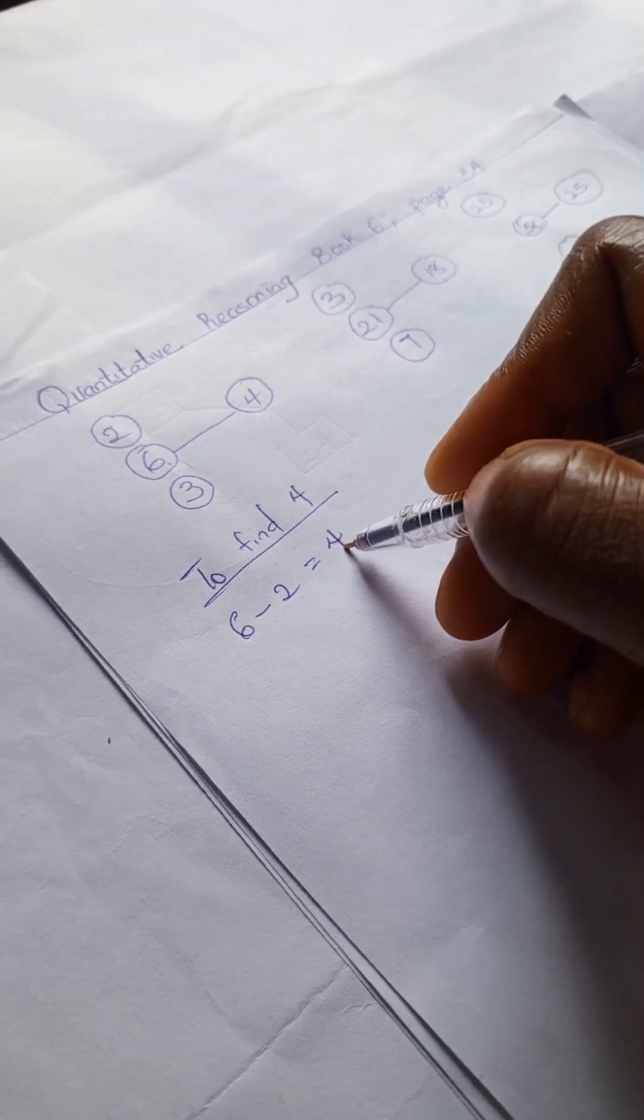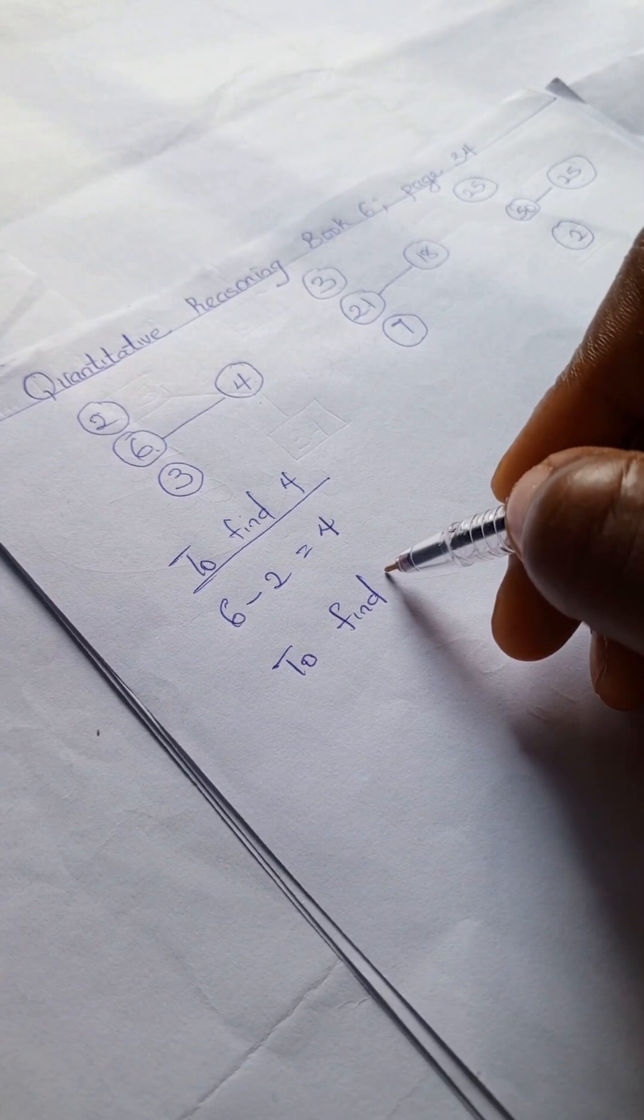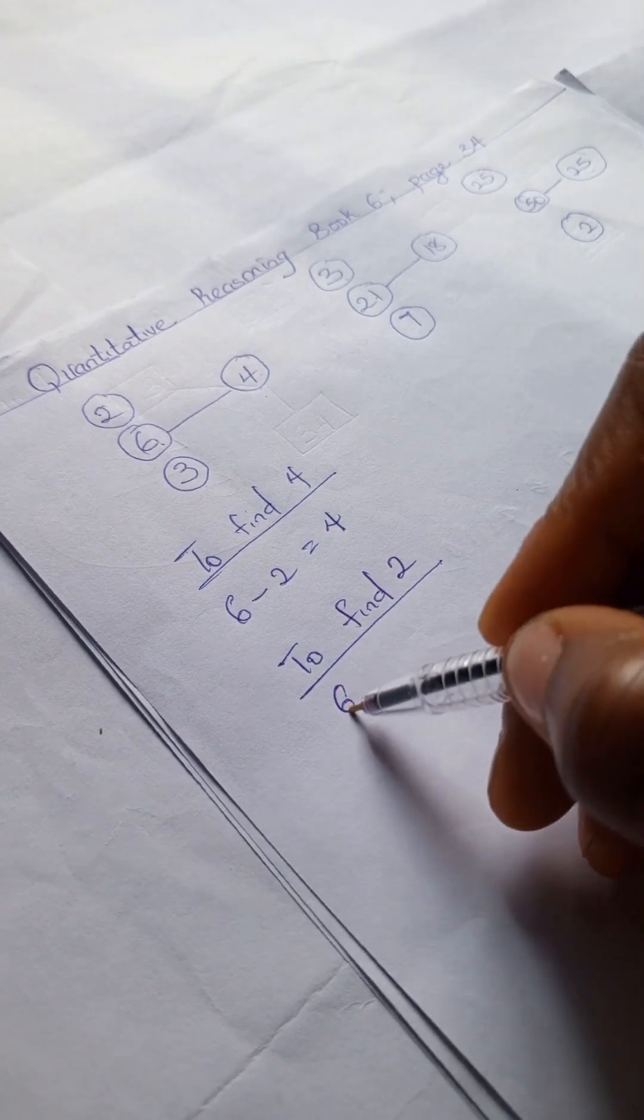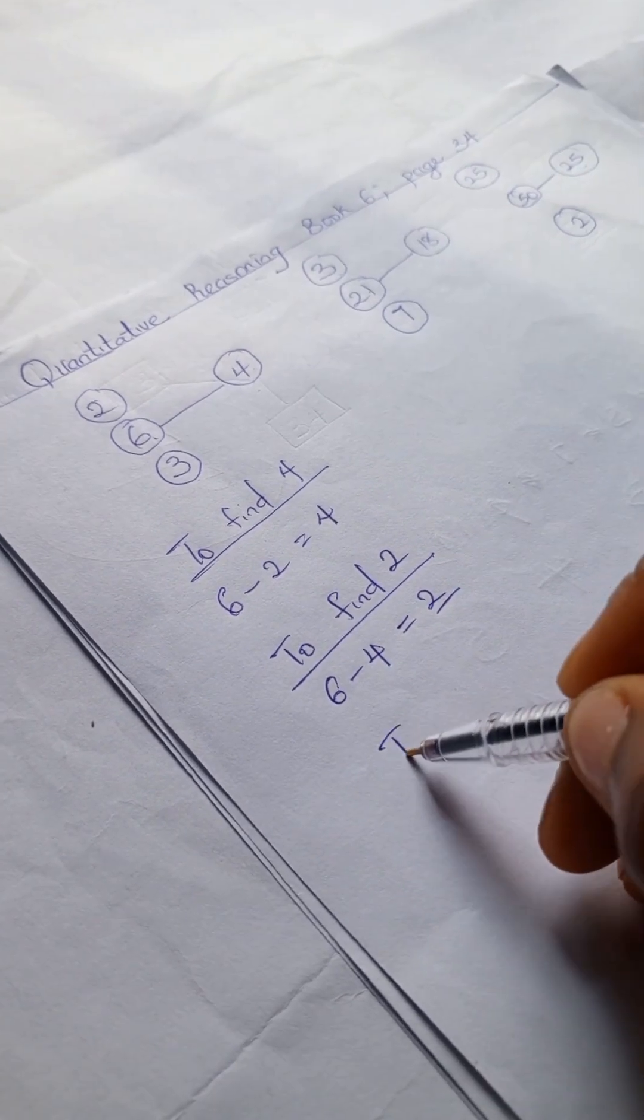To find 2, we have 6 minus 4, that gives us 2.